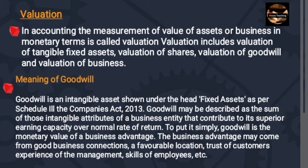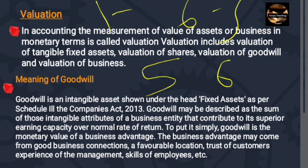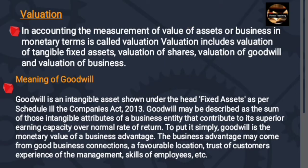For example, consider AB Limited. The normal selling price is 5 lakhs. AB Limited is sold for 6 lakhs. This is 1 lakh extra above the normal price of 5 lakhs. That extra 1 lakh would be the goodwill. If you get 6 lakhs when the normal rate is 5 lakhs, the extra 1 lakh is the goodwill.